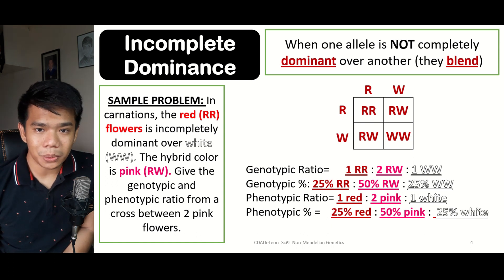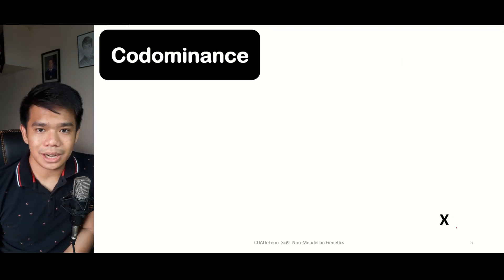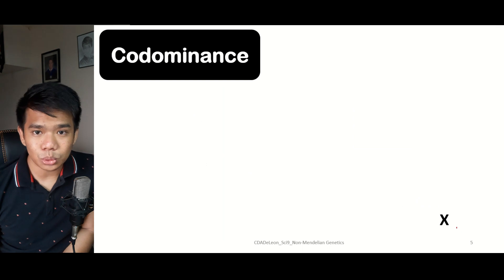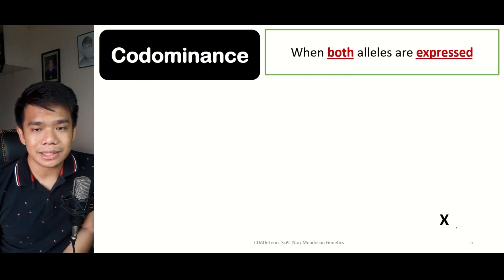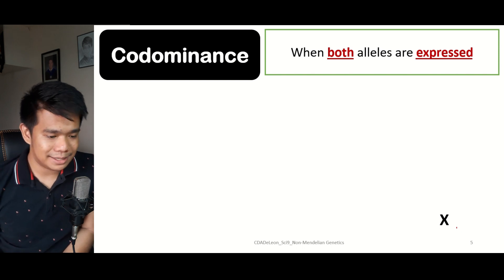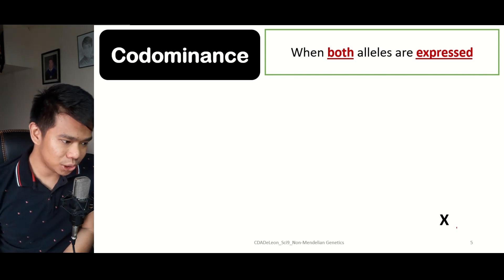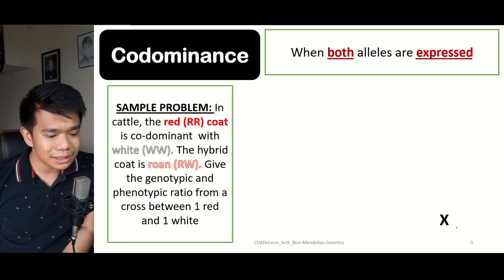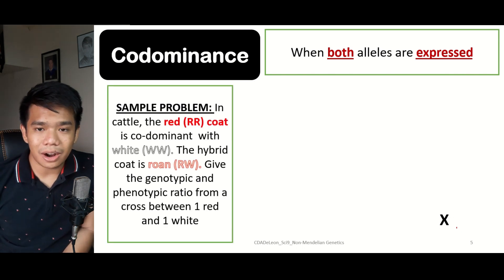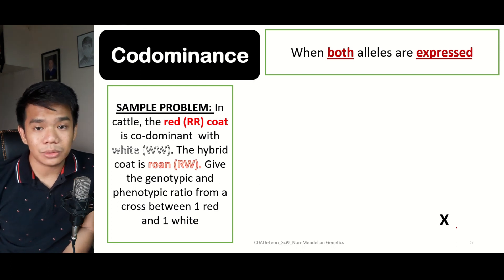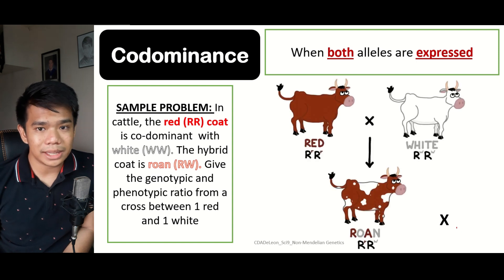Now let us proceed to co-dominance. Co-dominance is when there are two strong dominant traits. When you have two strong dominant traits, both alleles are expressed. This is present in animals. For example, the red and white coat colors in cattle are co-dominant with each other, and the hybrid coat is the roan — the roan representing both the red and white colors of the cattle.